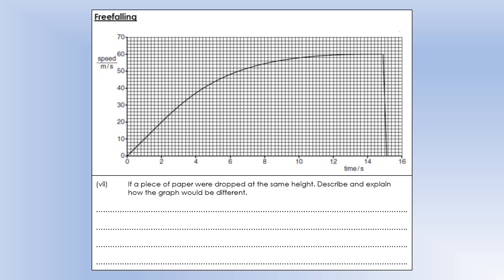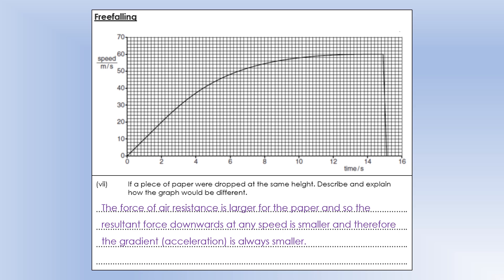So if a piece of paper were dropped at the same height, describe and explain how the graph would be different. So first of all, it's going to have a much bigger air resistance, because it's got a much bigger surface area. So at any given speed, the resultant force downwards is going to be smaller.